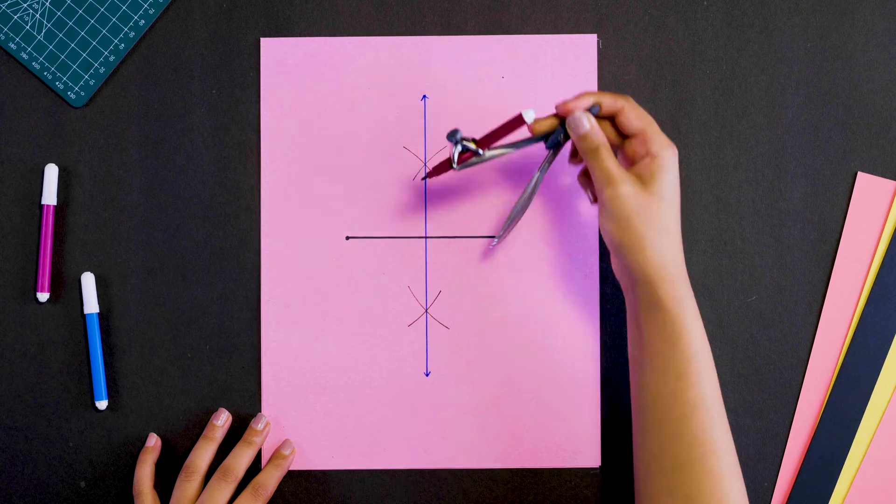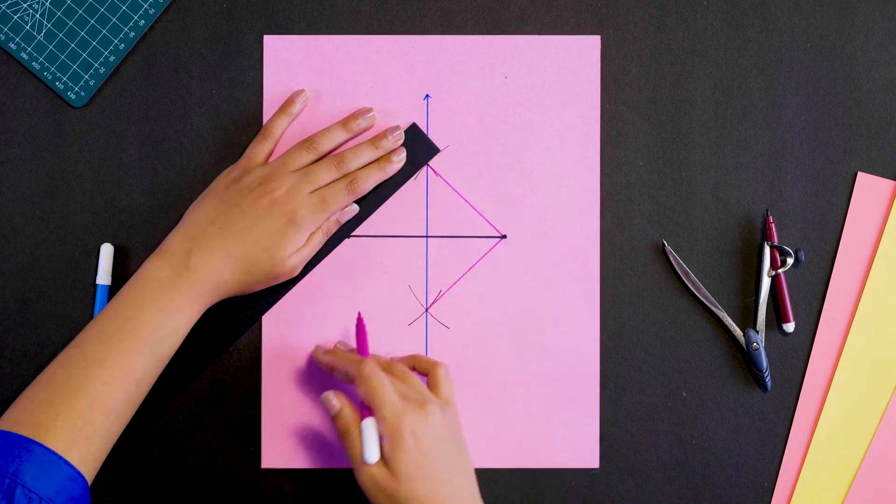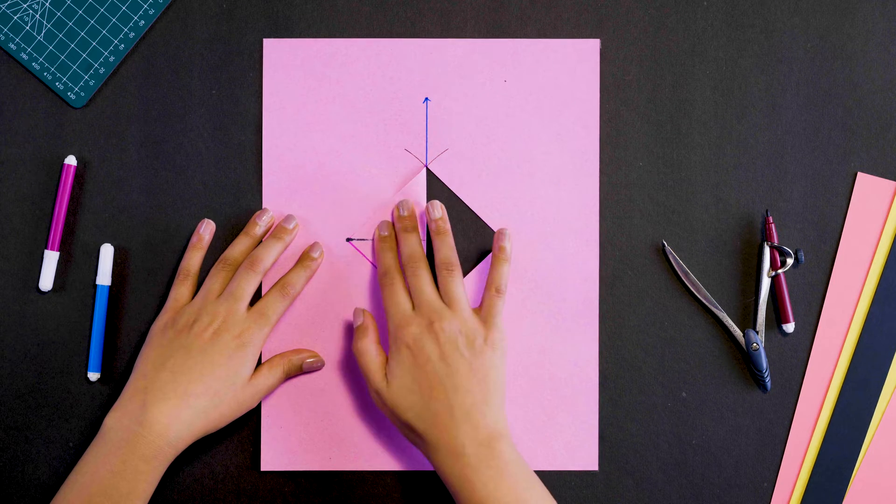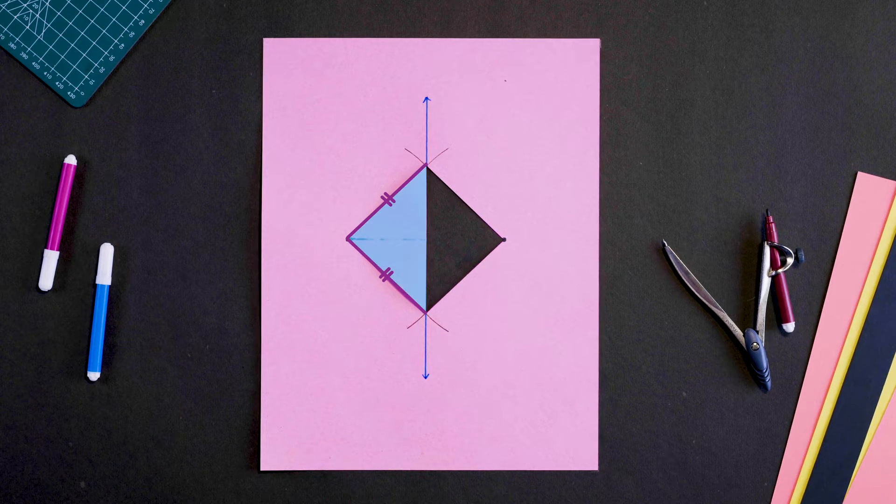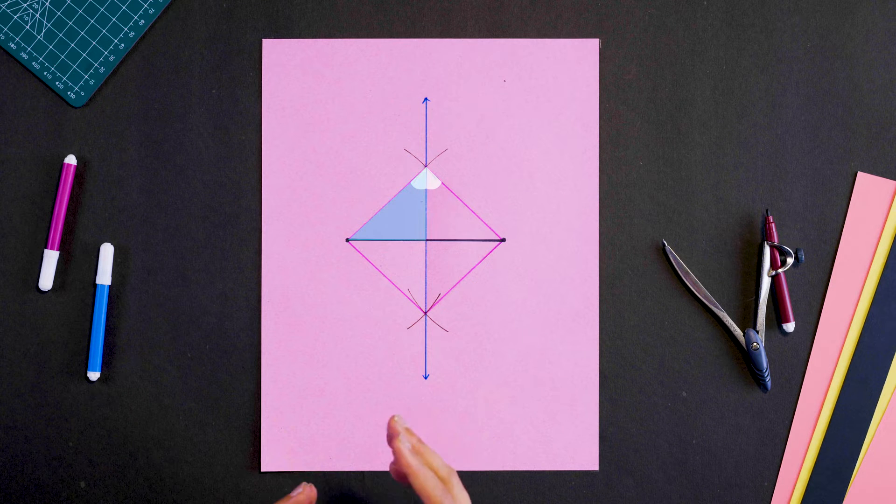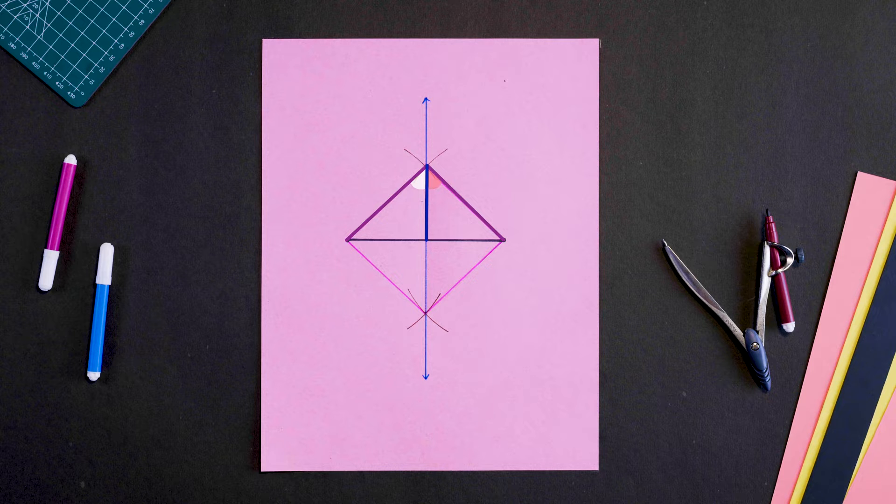But why does this work? Since we use the same radius for all four arcs, all these four segments must be equal. If we fold this shape aligning these two equal sides, we get two perfectly overlapping triangles with equal angles. Now in these two smaller triangles, these two sides and the included angle are equal.